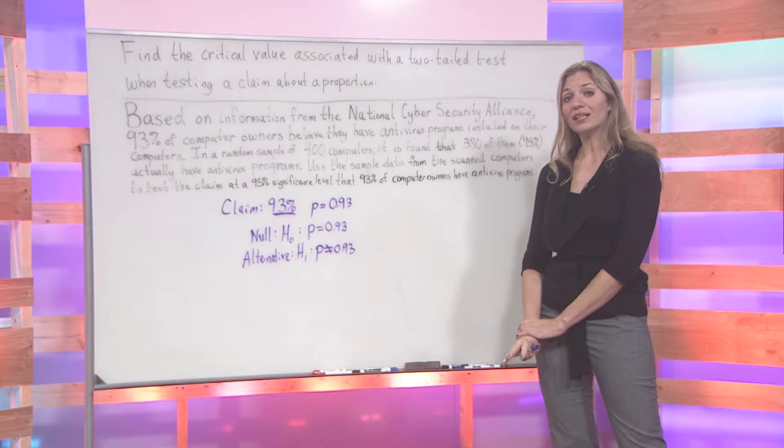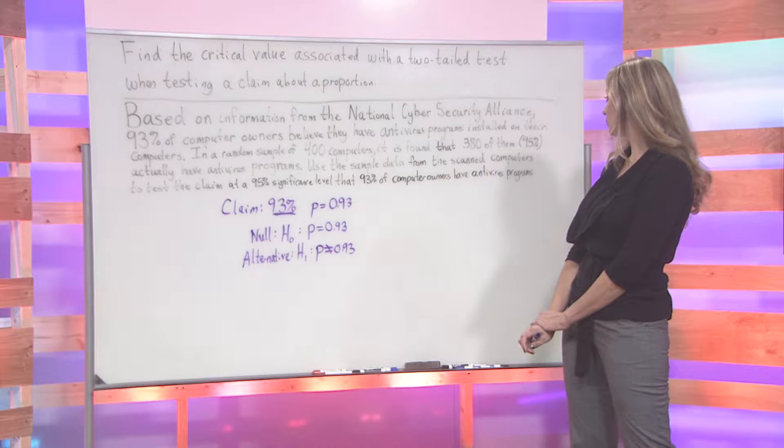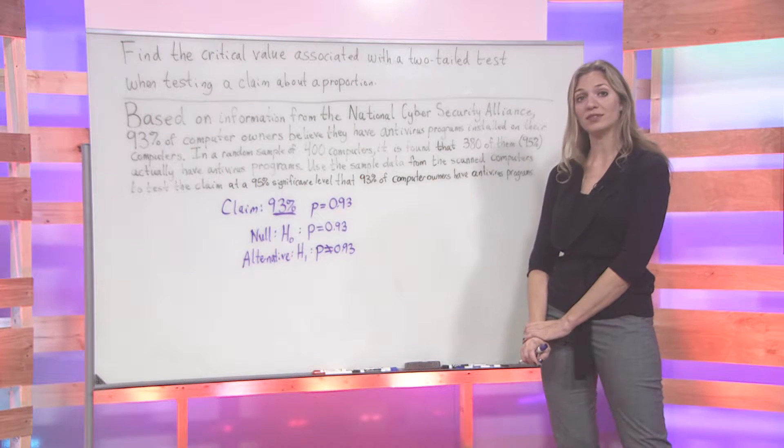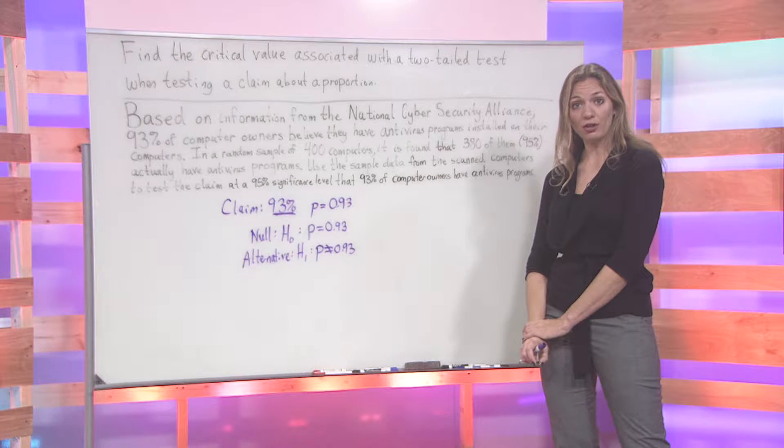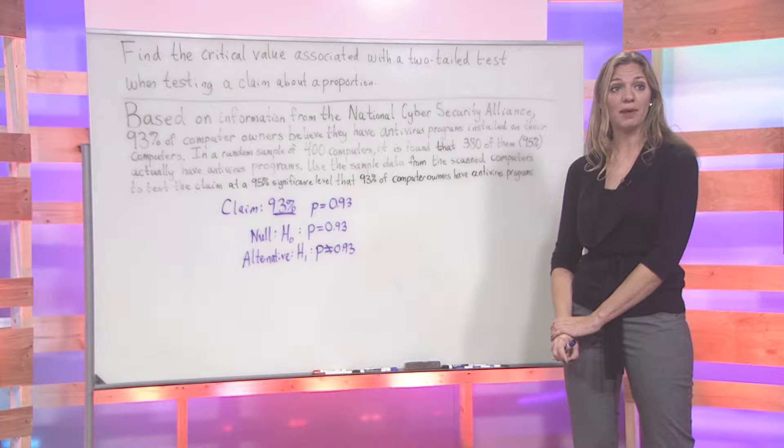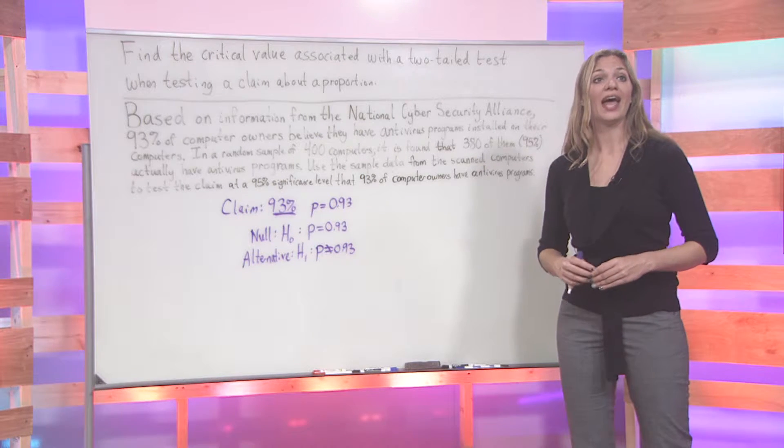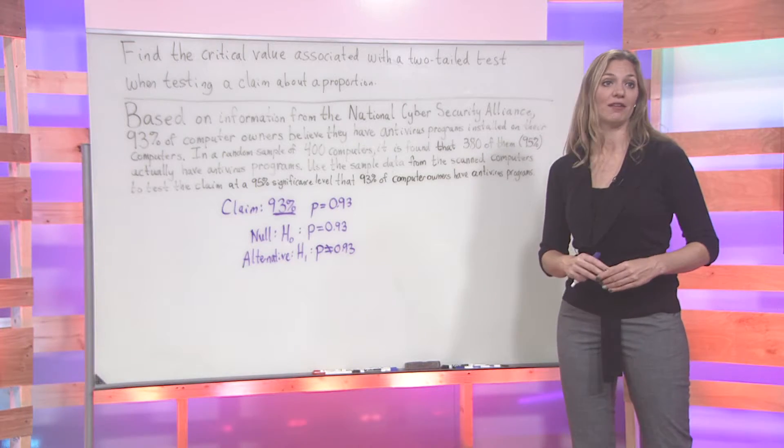We began by finding the claim. The claim here states that 93% of computer owners have antivirus programs. This allowed us to get our null hypothesis, p = 0.93, as well as our alternative hypothesis, p ≠ 0.93, as this is the opposite of the claim.